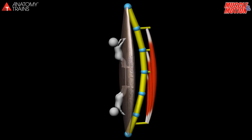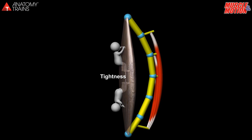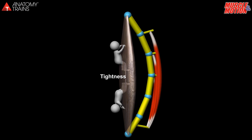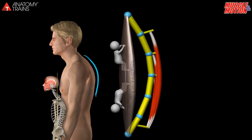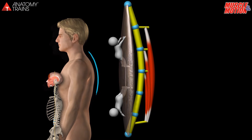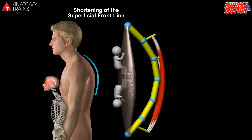Tight myofascia lacks flexibility and with time becomes rigid. For example, in the case of kyphosis, with time the front fascia in the chest and abdomen compresses and tightens.